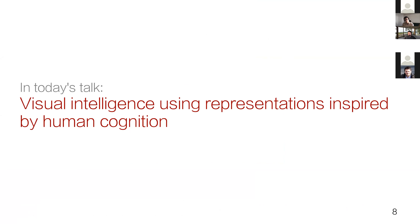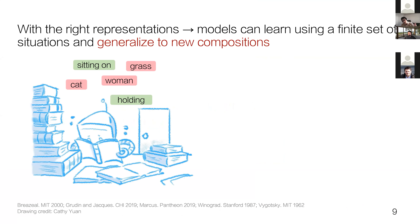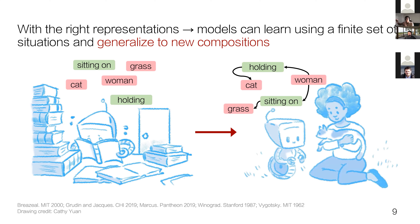Inspired by human learning, my research goal is developing visual intelligence and computer vision models using ideas inspired by human cognition. The main goal has been to move AI agents outside of their training data to allow them to generalize to novel compositions. In today's talk, I'll explore how we can design models that can generalize to novel compositions, drawing on Biedermann's scene perception model and Jeremy Wolf's model of visual memory from cognitive science.